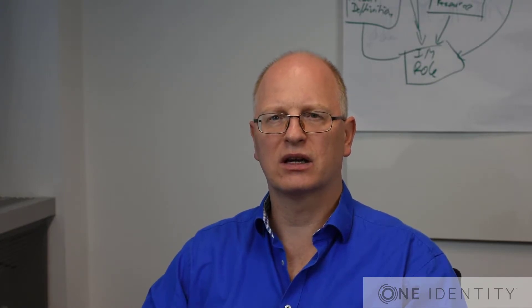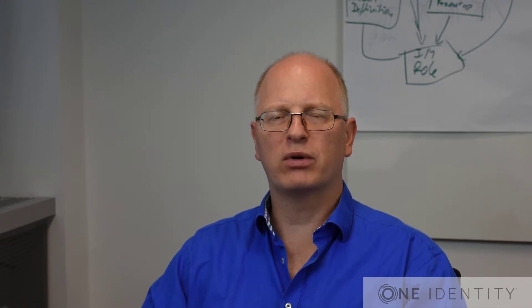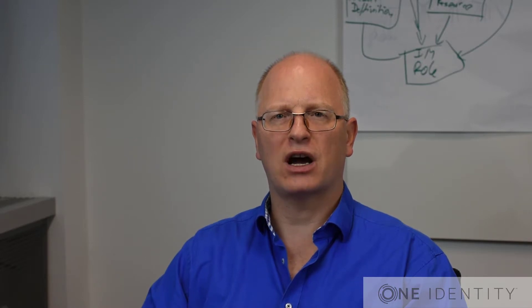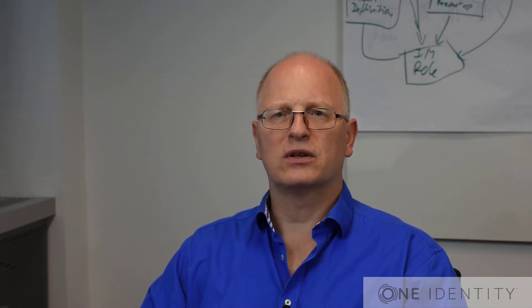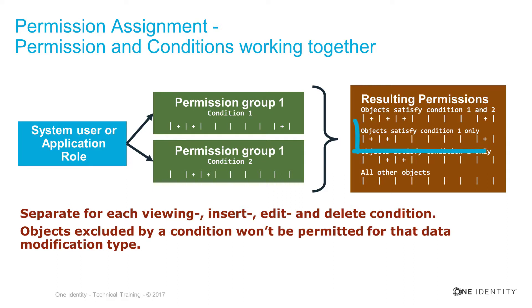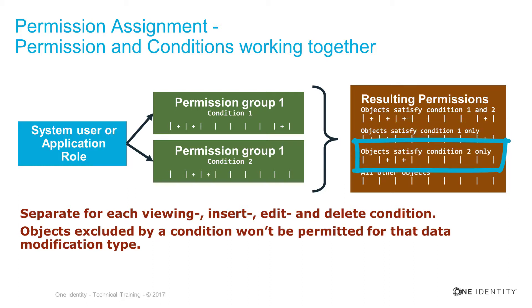The last question is what happens if conditions and permissions work together. They all get summed up. On the screen you can see two permission groups, both with a condition and both with some entitlements. Assuming both conditions are for the same data action, between the conditions there is an OR — objects are affected for one where clause or the other. The permission sets are scoped to their specific condition: all entitlements assigned to permission group 1 with condition 1 are valid for all objects matching condition 1, and entitlements from permission group 2 with condition 2 are only valid for the subset defined by condition 2. Together, these form the complete permission set for a person.